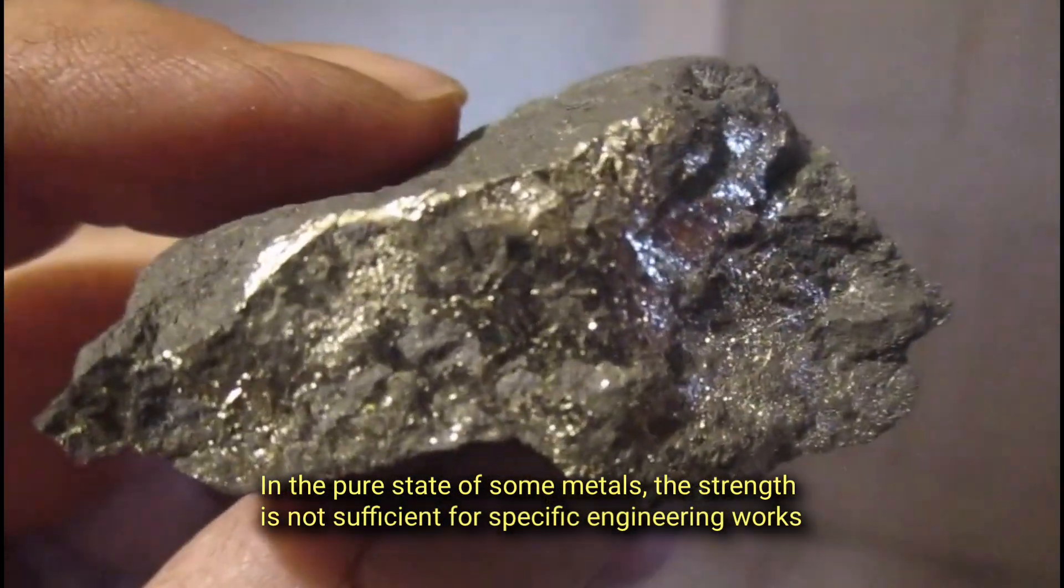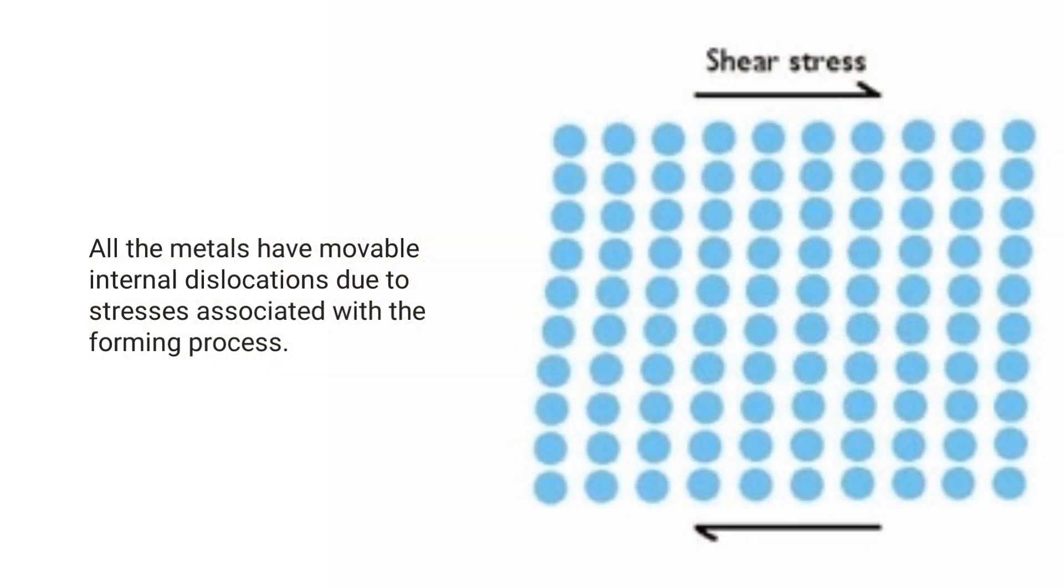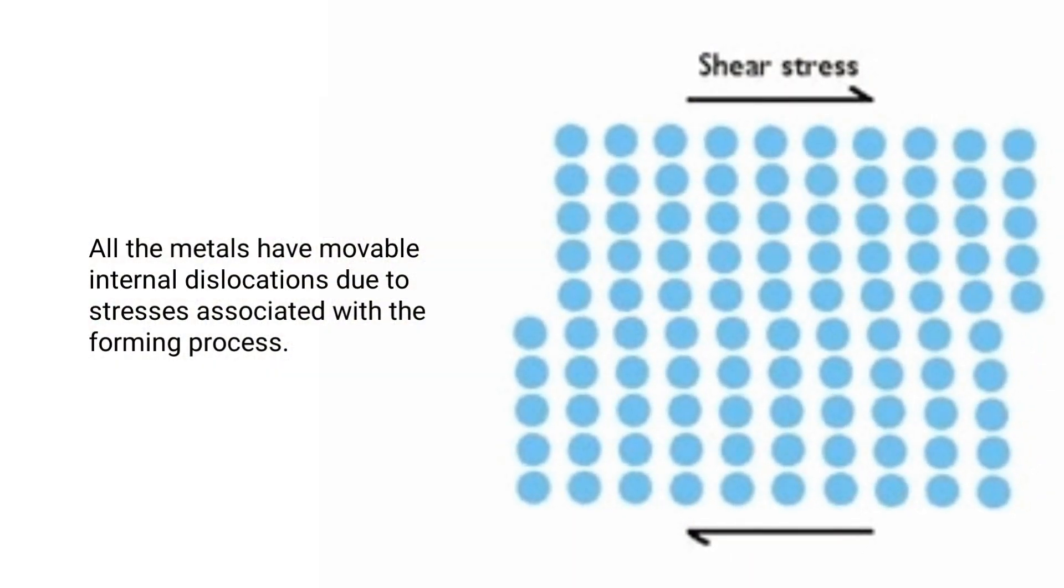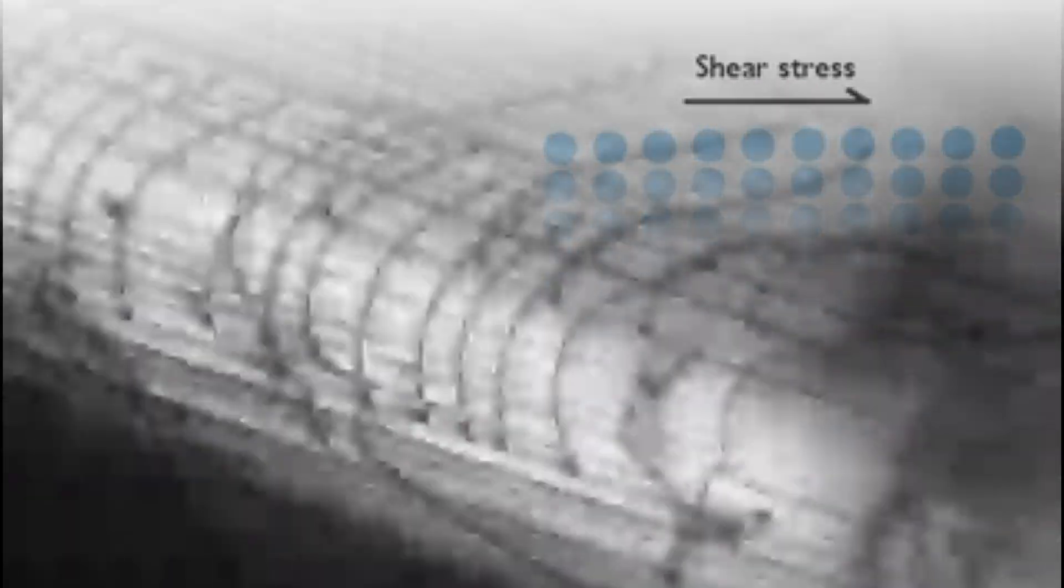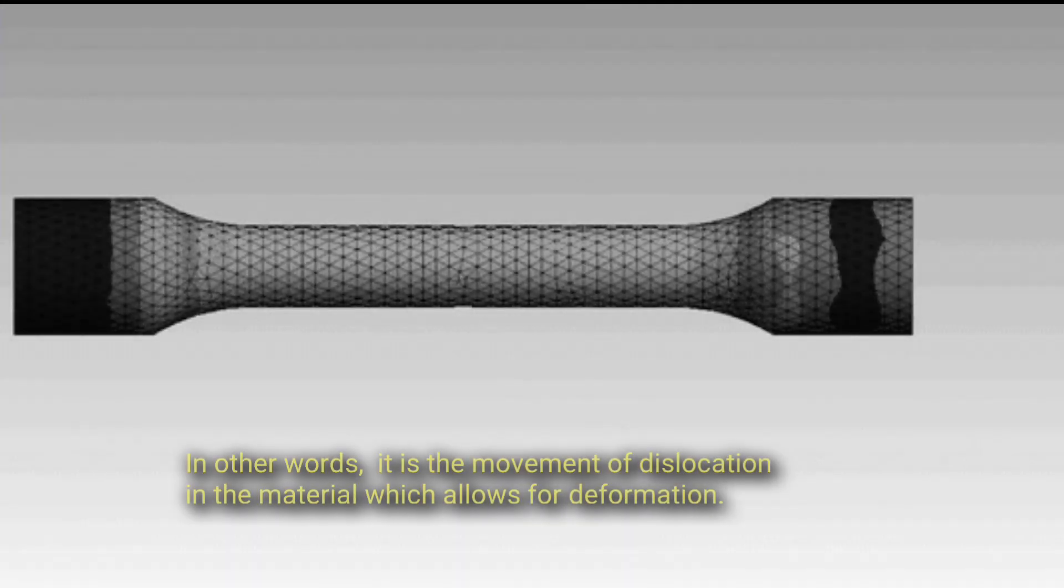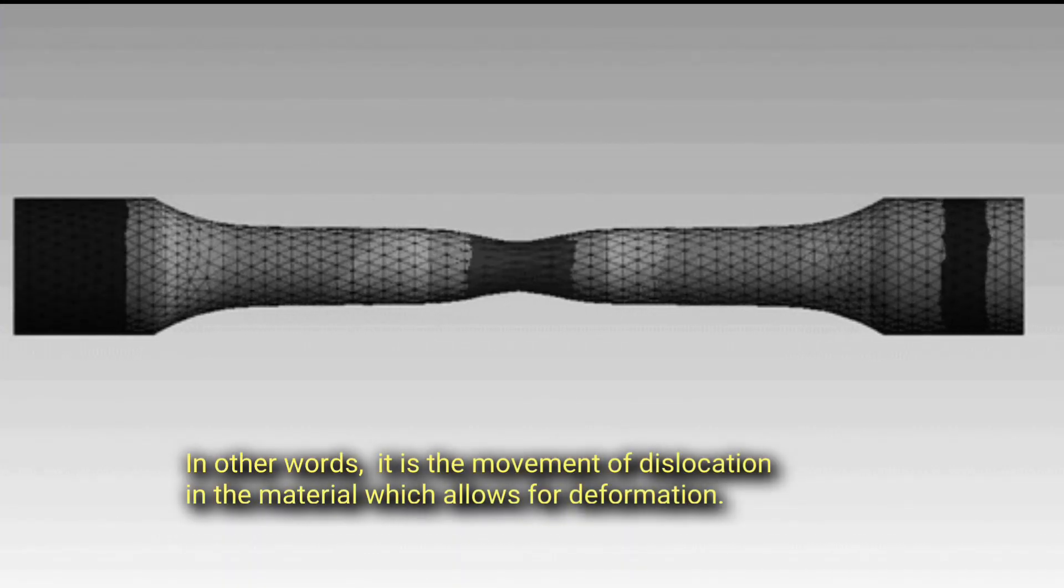In the pure state of some metals, the strength is not sufficient for specific engineering works. All metals have movable internal dislocations due to stresses associated with the forming process. The movement of these dislocations causes plastic deformation. In other words, it is the movement of dislocation in the material which allows for deformation.